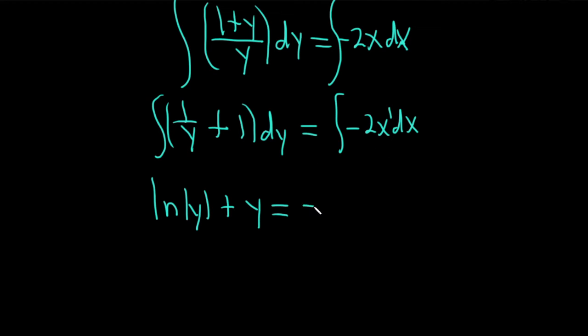There's a 1 here. So this is negative 2x squared over 2, plus our constant of integration, which I'll call c. So this is ln absolute value of y plus y equals negative x squared plus c.